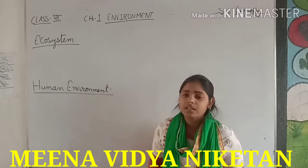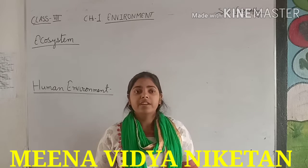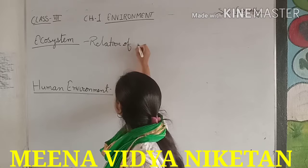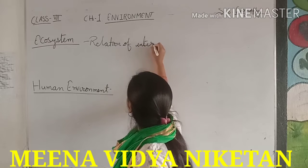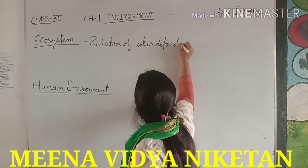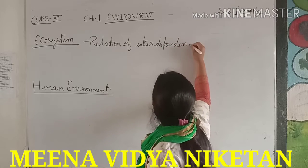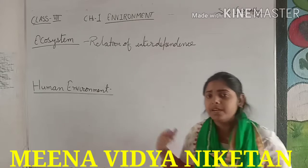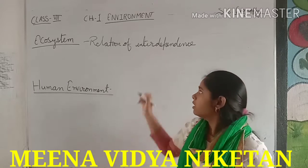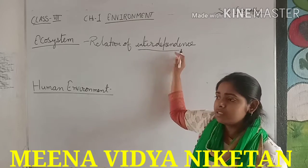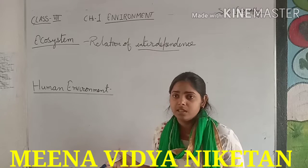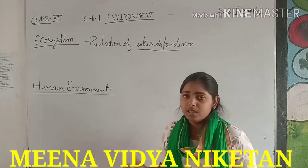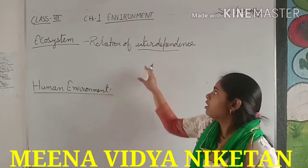Basically, ecosystem is a relation — a relation of interdependence. This interdependence means to depend on each other. That means animals depend on humans and humans depend on animals. Humans depend on other animals, and plants depend on animals. These all are the relations between them.